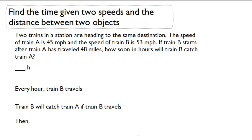Train A has already traveled 48 miles, but train B is traveling 53 miles per hour, whereas train A is only traveling 45 miles per hour.